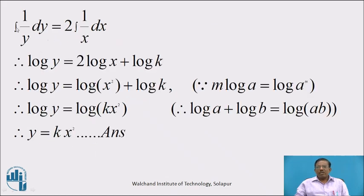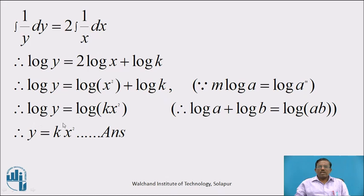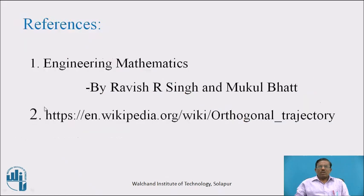Integrating both sides: ∫(1/y) dy = 2∫(1/x) dx. Therefore log y = 2 log x + log k = log x² + log k = log(kx²). Canceling logarithm from both sides: y = kx². This is the required family of curves which is orthogonal to the given curve. To prepare this video lecture, I referred to these two references. Thank you.